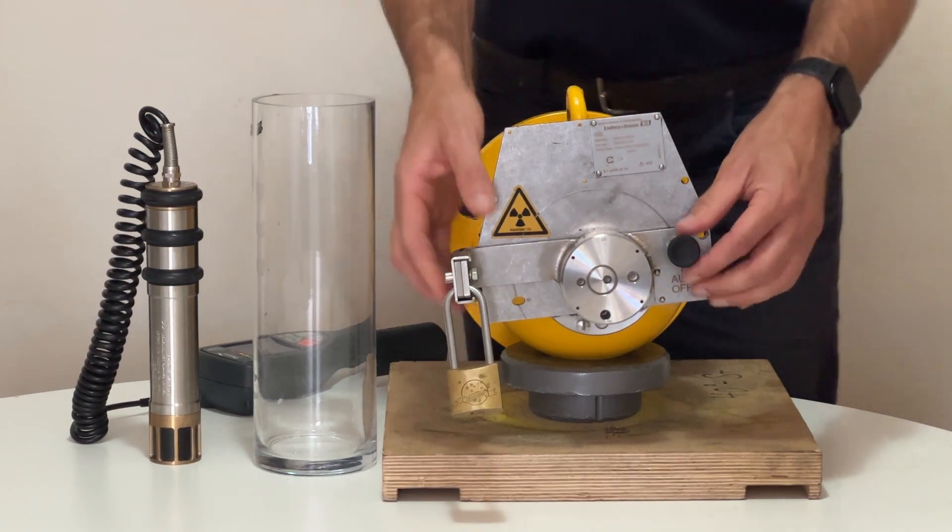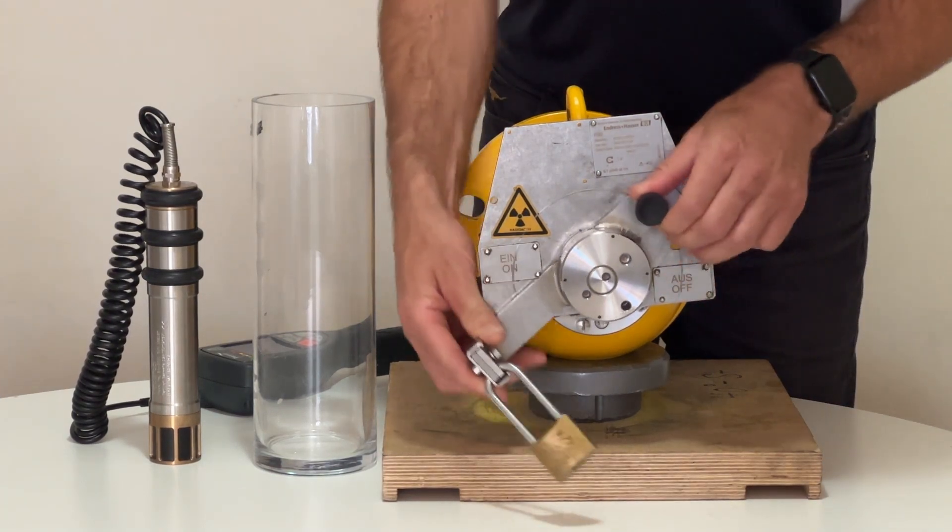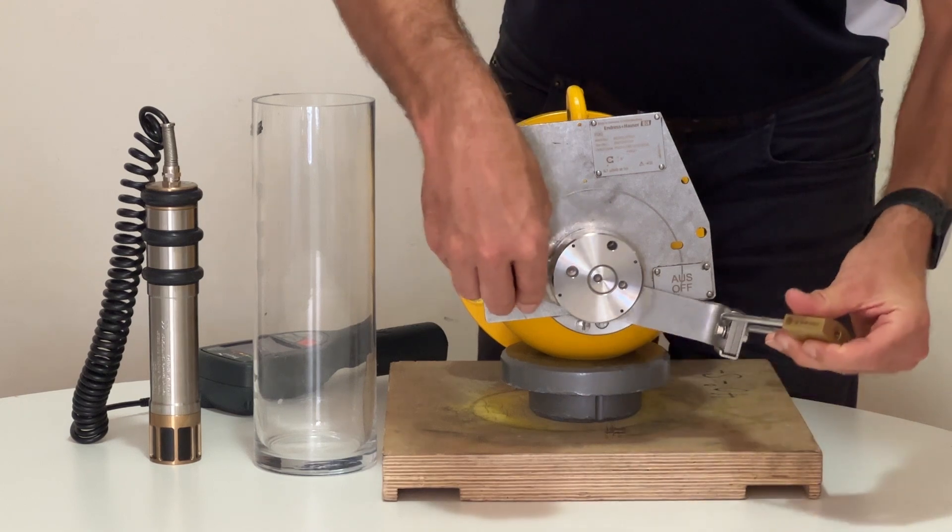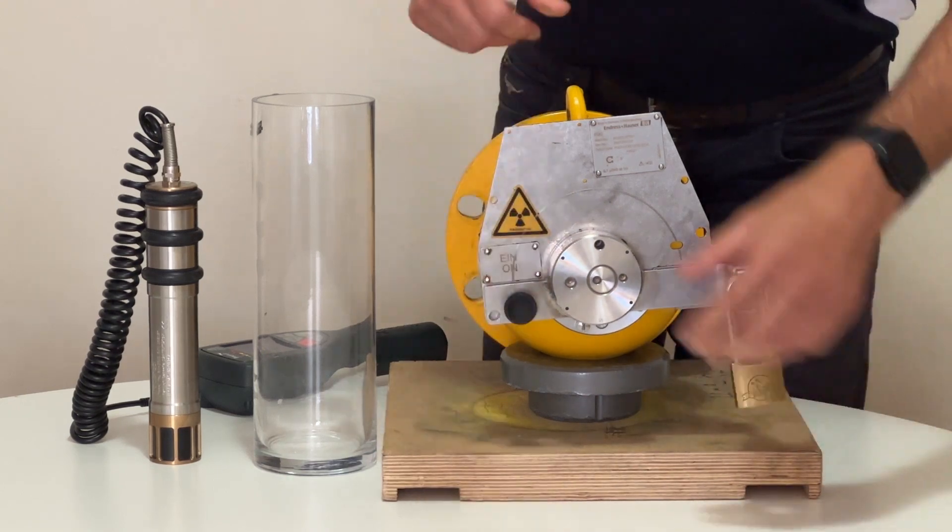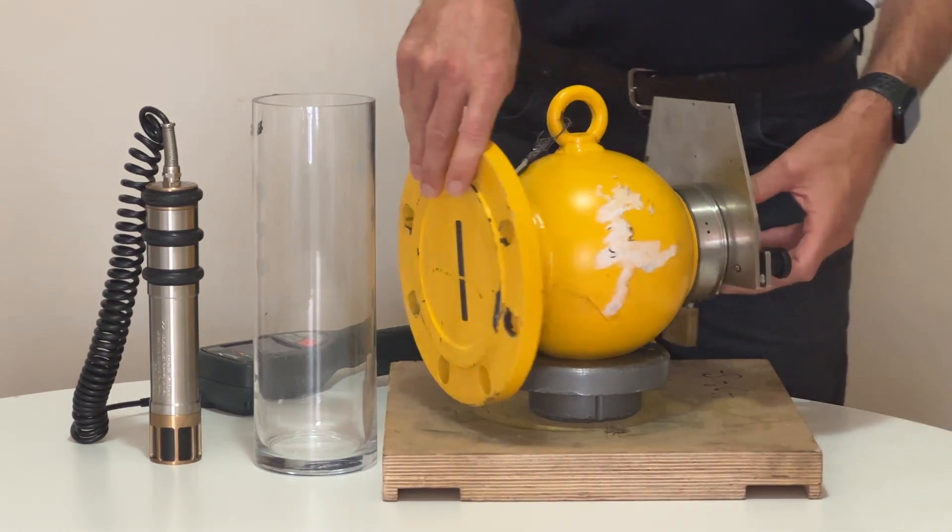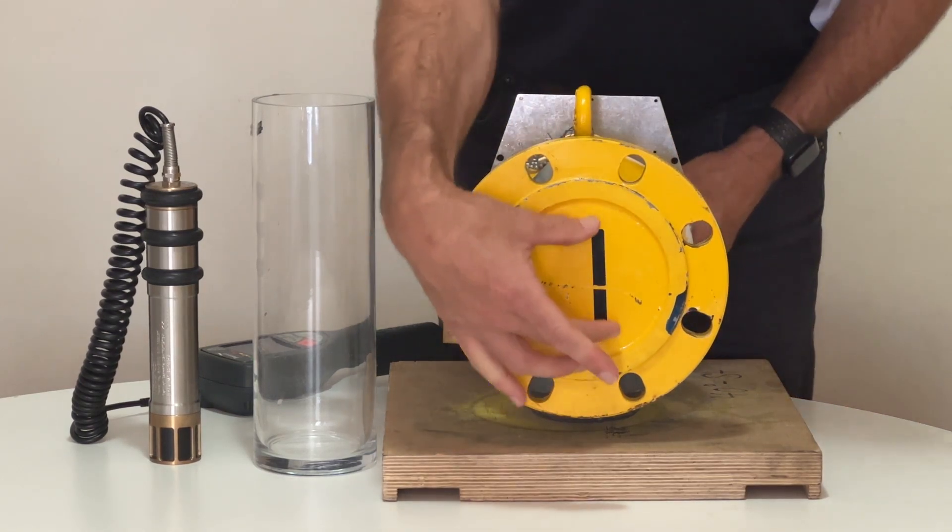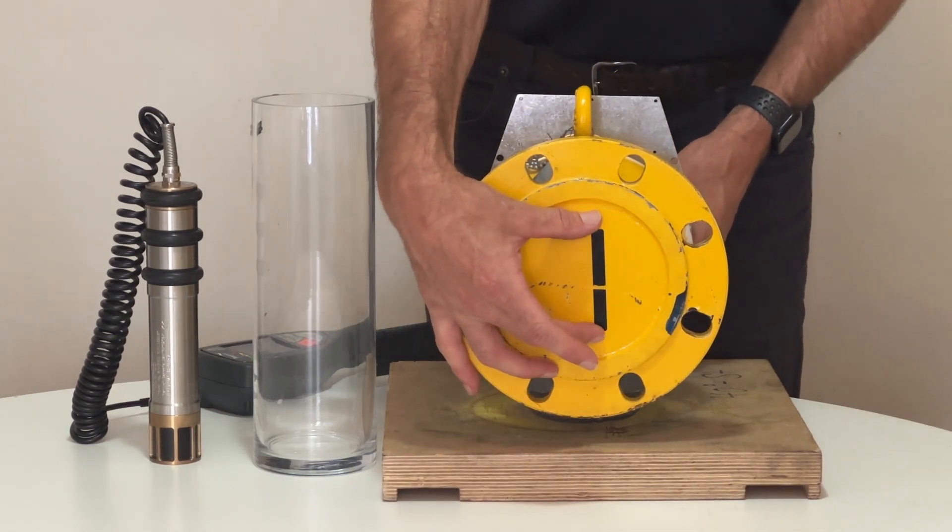A typical source housing has a beam on and a beam off position. Simply by rotating this handle, we can allow a radiation beam to be emitted from the area that this black sticker is located.